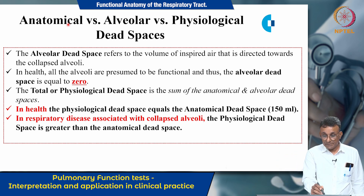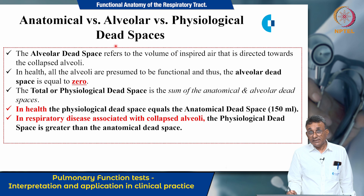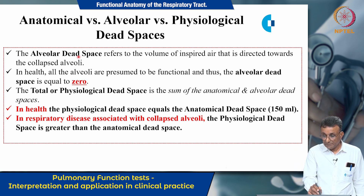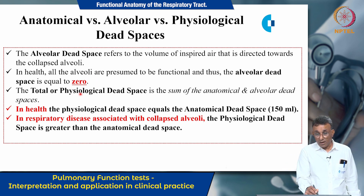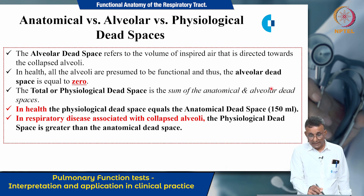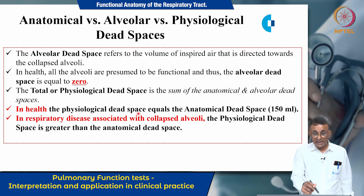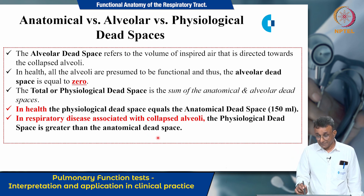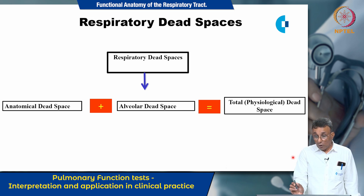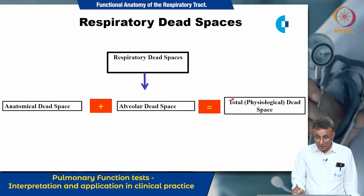There are three types of dead spaces: the anatomical, alveolar, and physiological dead spaces. The anatomical dead space is the volume of air present in the conducting zone of the lungs, normally 150 ml. The alveolar dead space refers to the volume of inspired air directed towards collapsed alveoli; in health, all alveoli are presumed functional, so the alveolar dead space equals zero. The physiological dead space is the sum of anatomical and alveolar dead space. In health, physiological dead space equals anatomical dead space, but in respiratory disease with collapsed alveoli, physiological dead space exceeds anatomical dead space.